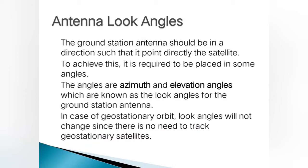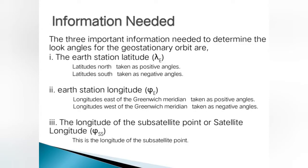In the case of geostationary orbit, look angles will not change since there is no need to track geostationary satellites. As the orbit of geostationary satellites is fixed, look angles will not change. Now, what are the three important pieces of information needed to determine the look angles for the geostationary orbit?